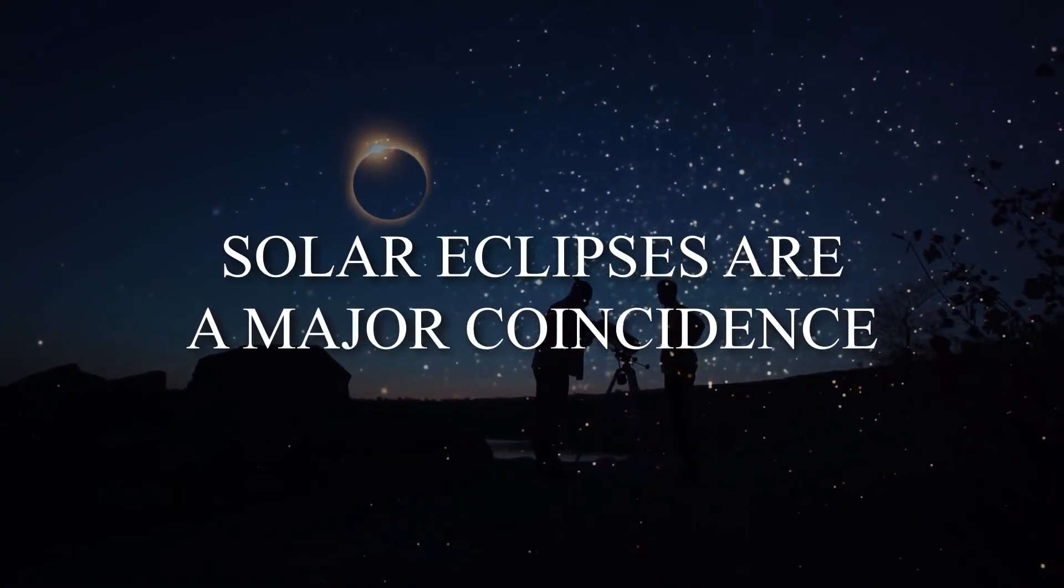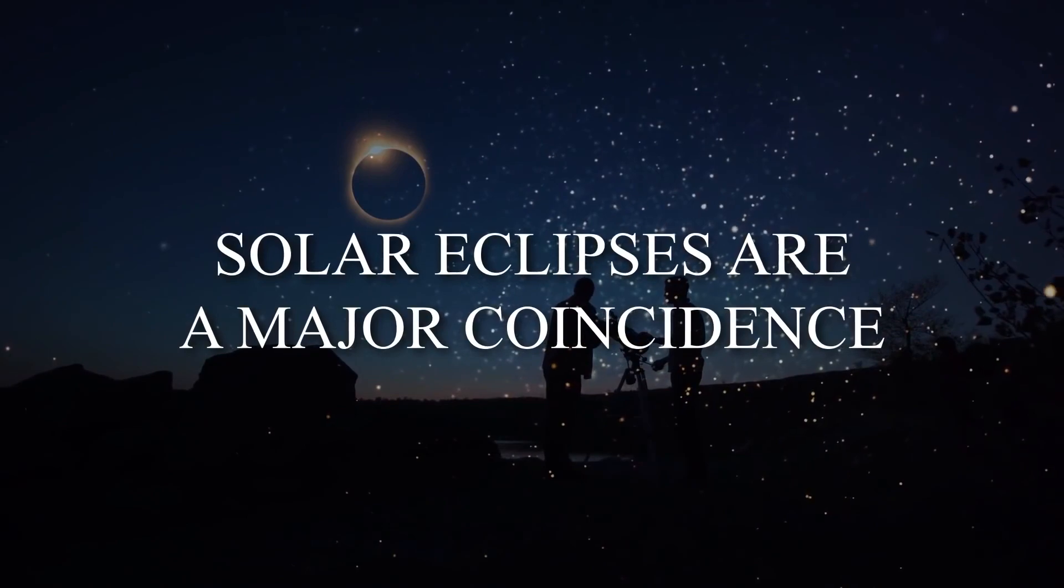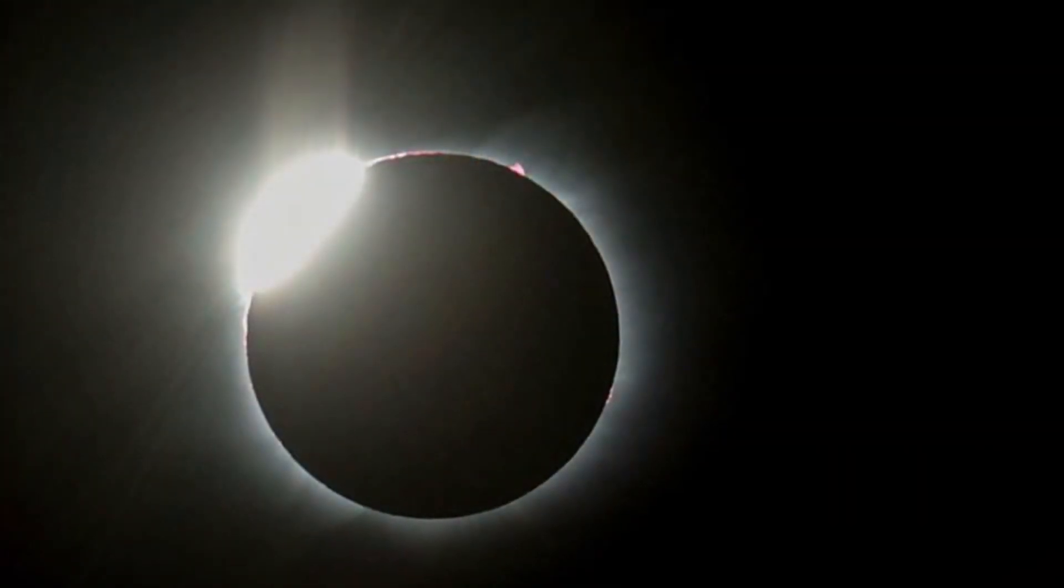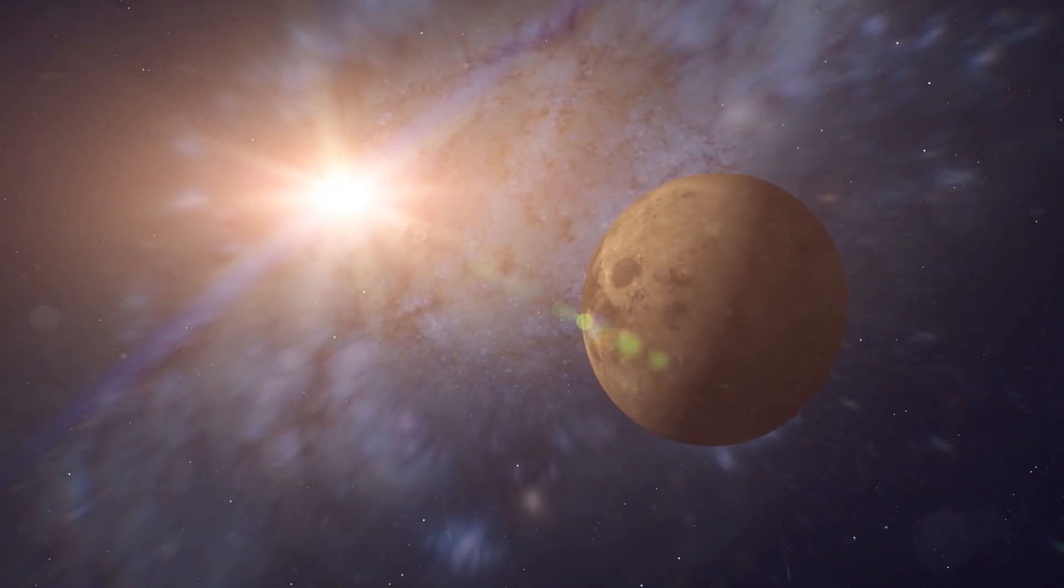Number nine: Solar eclipses are a major coincidence. Everyone has seen beautiful images of full solar eclipses with the moon slowly blocking out the Sun. Did you ever wonder why they appear to be the exact same size when, of course, they're not?